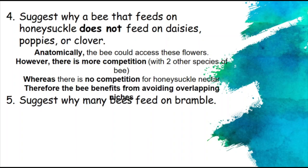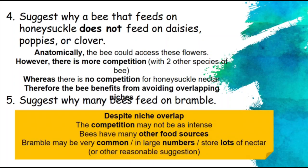Why do many bees feed on bramble? Despite niche overlap, competition may not be as intense because bees have many other food sources. Also, bramble is very common and has a lot of nectar, so there may simply be enough for everyone. Any other reasonable suggestion would be accepted. It could also be that bees visit bramble quite rarely and spend most time on other food sources, so competition is just not as intense.